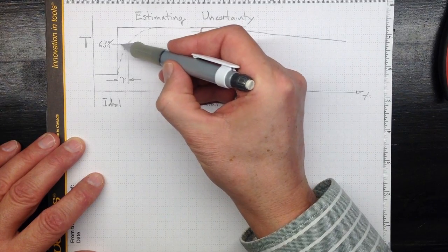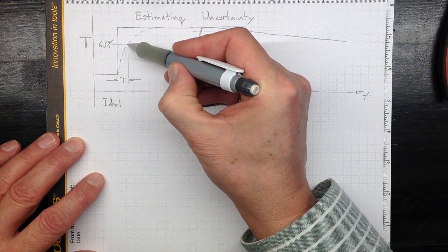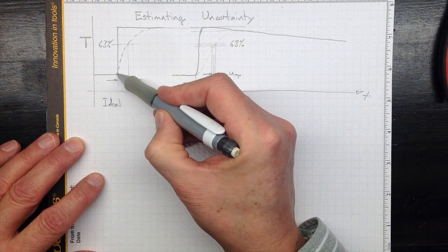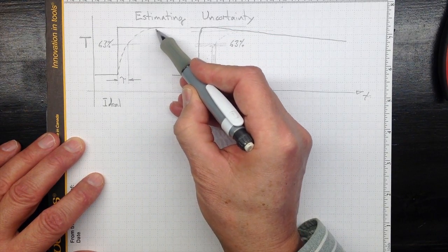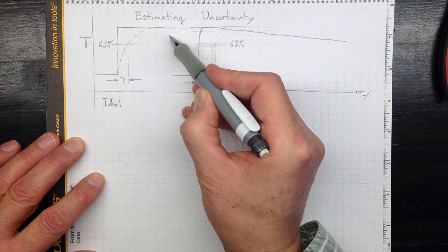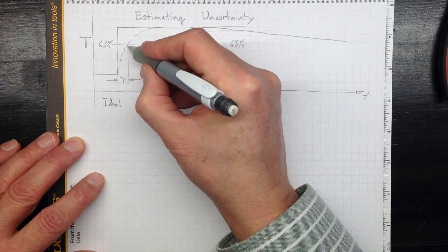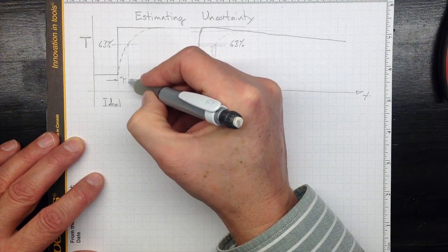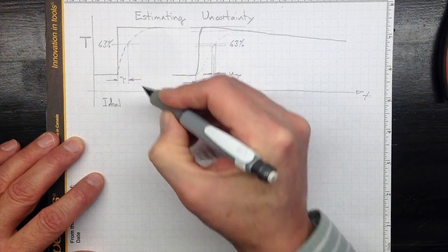The time constant would be when we got to 63% of that final asymptotic value. It would go up and get closer and closer and eventually reach an asymptote. From this data, if we were fairly confident in all these values, we could get a time constant with very low uncertainty.